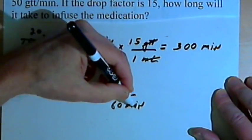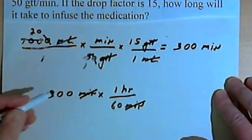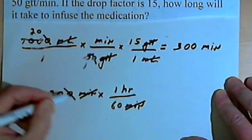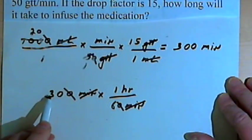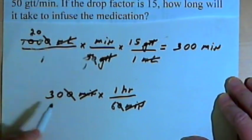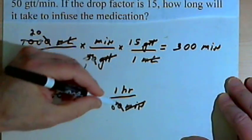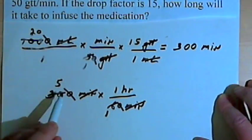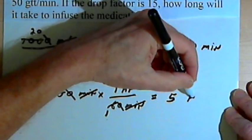The minutes will cancel out. I've got 300 and 60. I'll divide them both by 10 to begin with. I'll cross a 0 off of each one. And I can divide 30 and 6, both of those numbers by 6. So 30 divided by 6 is 5. 6 divided by 6 is 1. I'm going to be left with 5 hours.